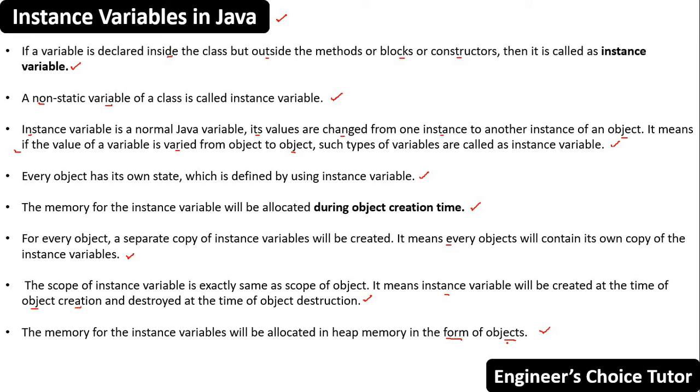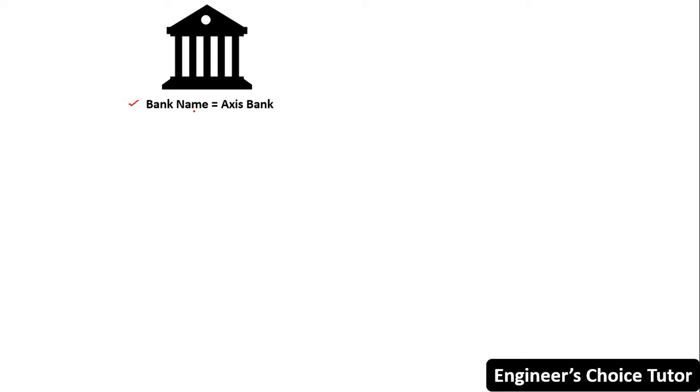Now let's understand the concept of instance variables with a real-time example. Suppose there is one bank named X bank. A bank can have lakhs of customers, and details like account number, name of customer, father name, PAN number, and Aadhaar card number can vary from customer to customer.